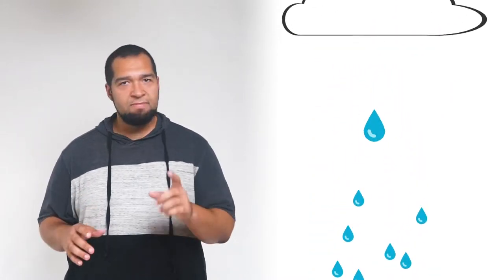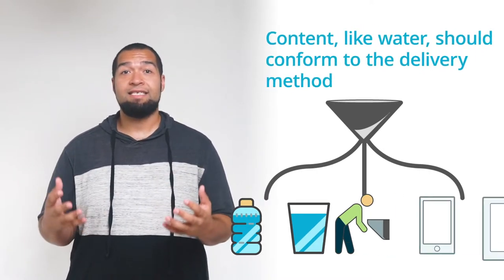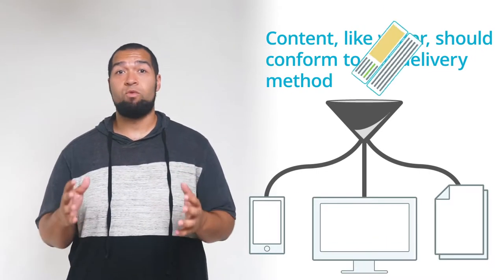Let's consider content as water. If you're parched, you have options on how to get a drink. You might use a drinking fountain, perhaps tap water in a glass, or maybe bottled water. The fountain, the glass, and the bottle are just different delivery mechanisms for the same thing: water. Water is malleable. Water conforms to the delivery method. This is how content should work, and it can work this way.